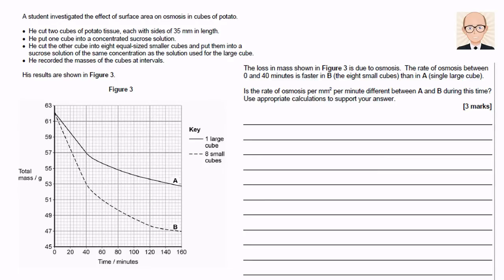We're also told, and we can see this for ourselves, that the rate of osmosis during the first 40 minutes is greater in the smaller cubes than in the larger one. We're then asked if the rate per square millimetre is different for these two groups of cubes. Pause the video here and have a go at this question for yourself first.